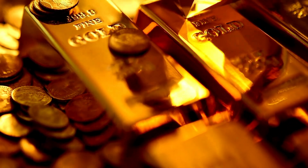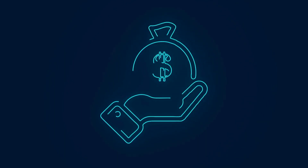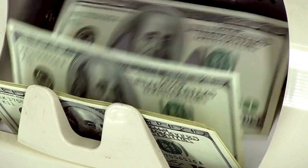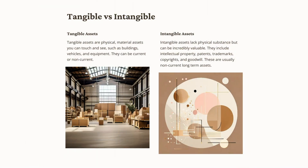An asset, in its simplest form, is a resource that holds economic value. Essentially, they are resources owned by a business or individual that are expected to bring future economic benefits. Think of them as valuable items or resources that you can own that can help generate income, reduce expenses, or be sold for cash. Assets can be tangible, like buildings or a piece of machinery, or they can be intangible — not physical, but still valuable — such as copyrights, patents, trademarks, or goodwill.